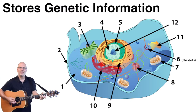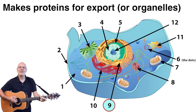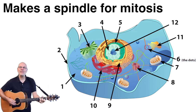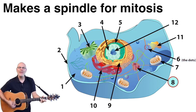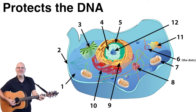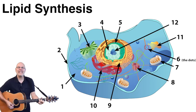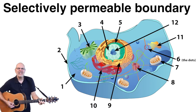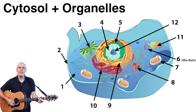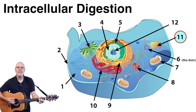Stores genetic info. Makes proteins for export or for organelles. Translates mRNA. Makes the spindle in mitosis. Makes ATP. Protects the DNA. Protein packaging and sorting. Lipid synthesis. A selectively permeable boundary. Cytosol plus organelles. Intracellular digestion. Makes ribosomes.